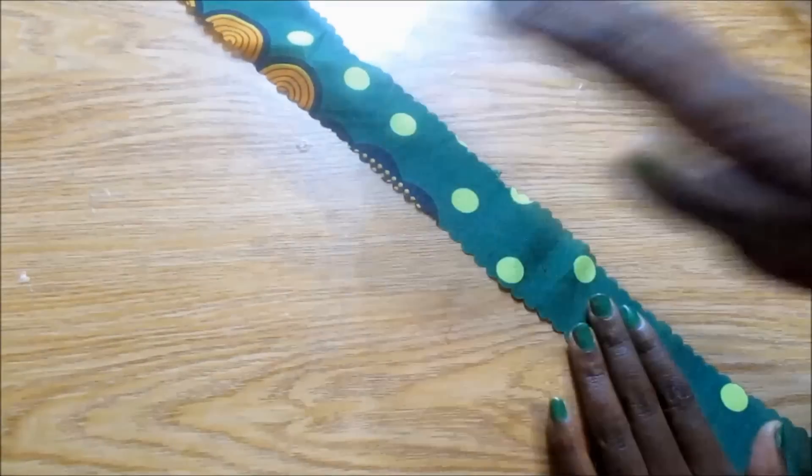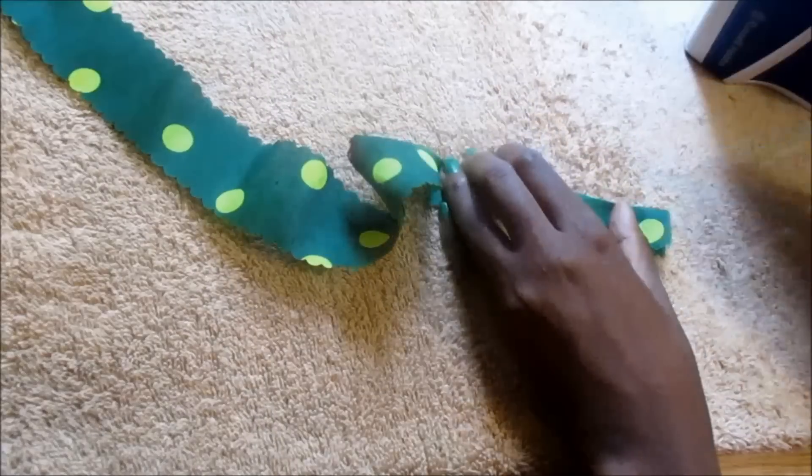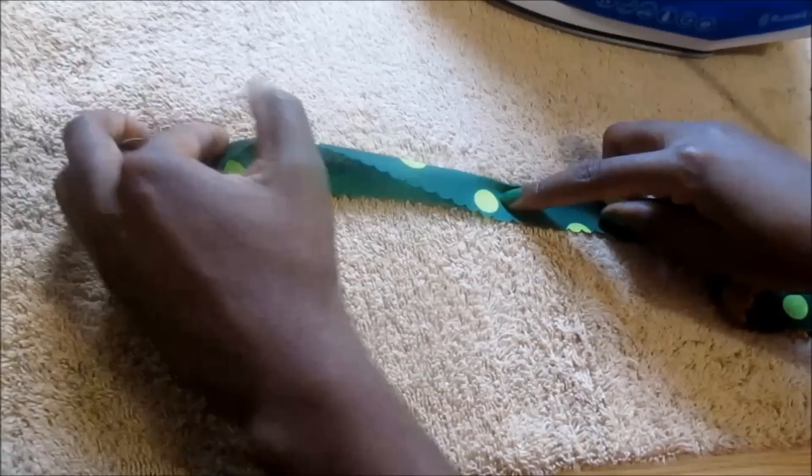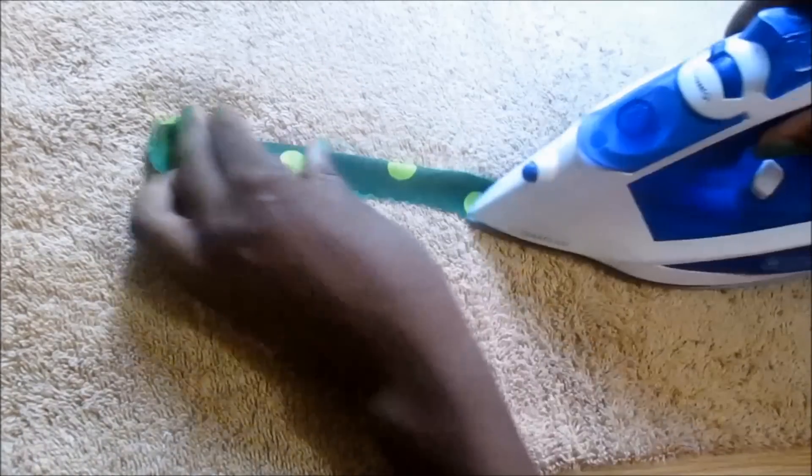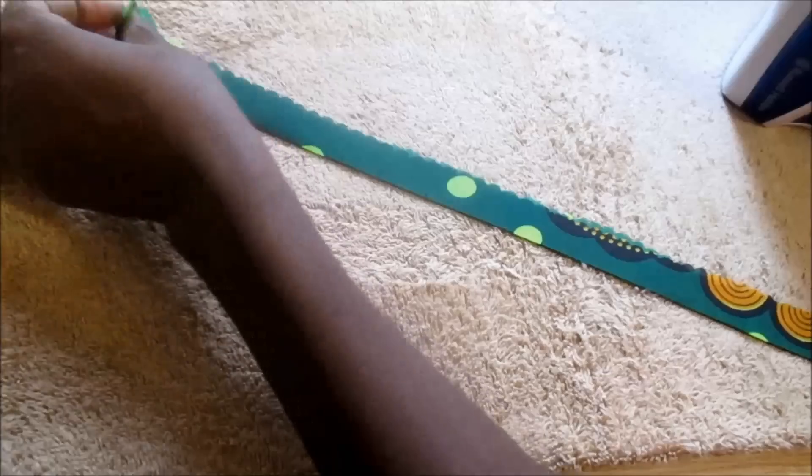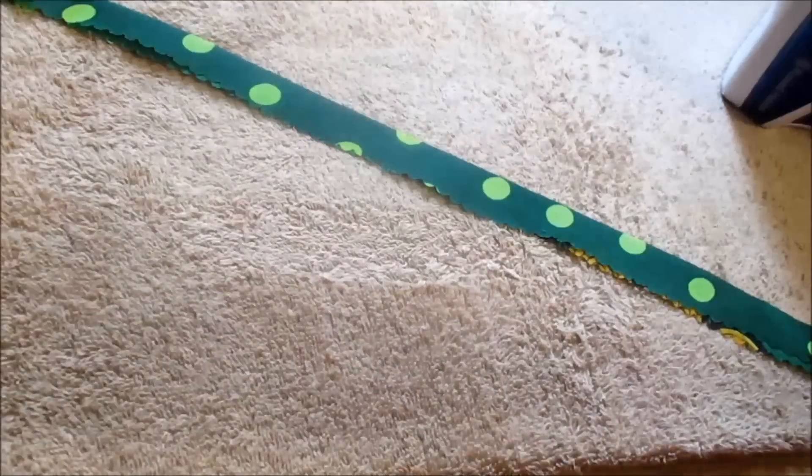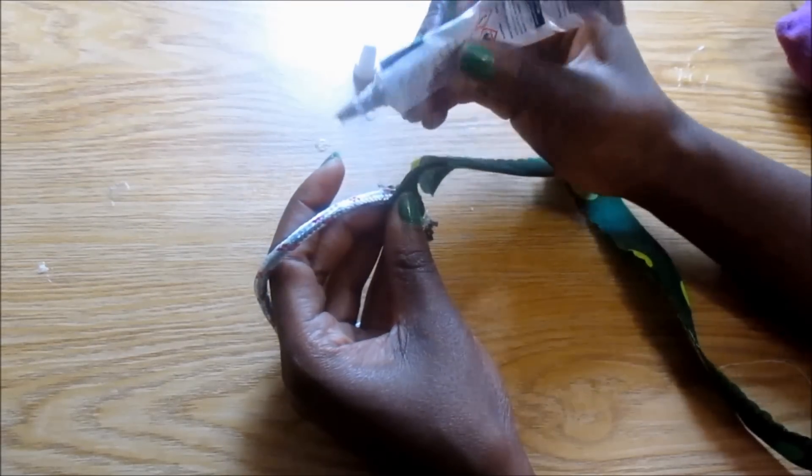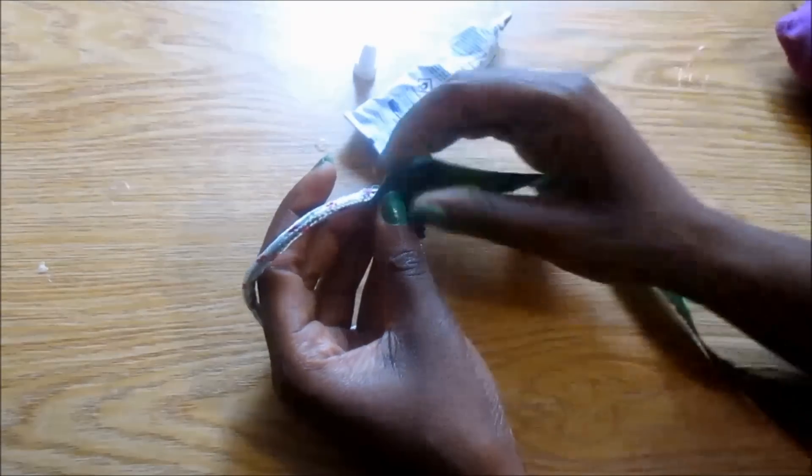The next thing that I did was to fold the fabric strip in half and then iron it in place to make sure that all the raw edges are on one side. And after that I just started gluing the fabric strip onto the rope and I just kept on flipping it around until it was all covered.